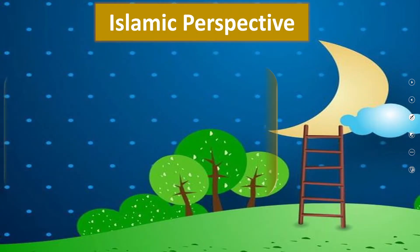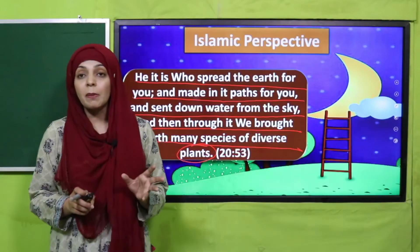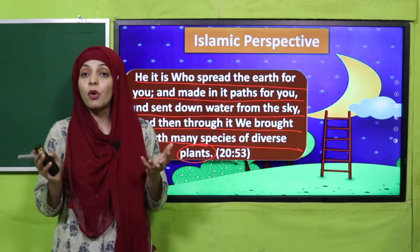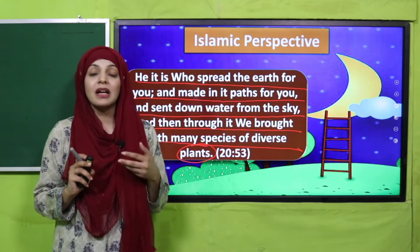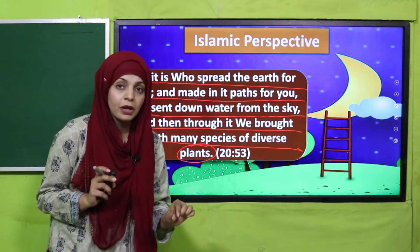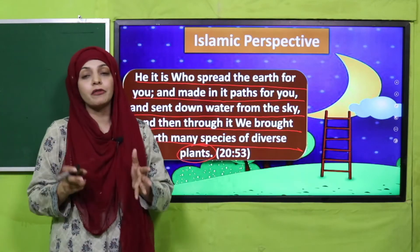Let's look at the Islamic perspective. Allah says in the Quran: 'He it is who spread the earth for you and made it ready for you, and sent down water from the sky, and through it We brought forth many species of diverse plants.' So Allah tells us in the Quran that from water, different plants grow, and each plant is different from another. There is diversity of plants — some are very small, some are very big, some have flowers, some have fruits.